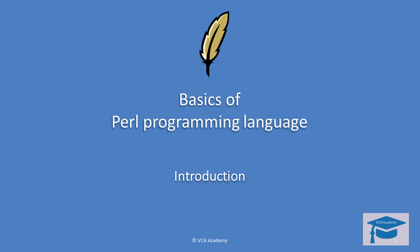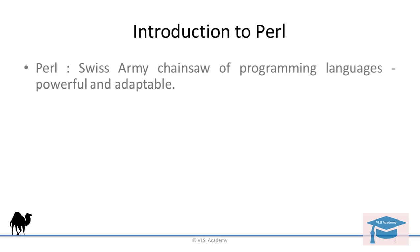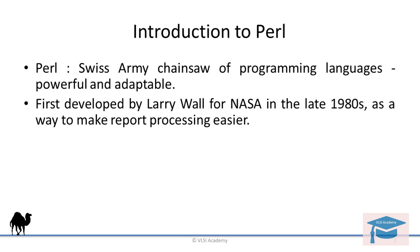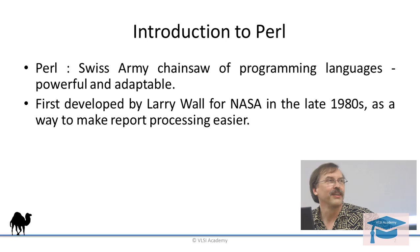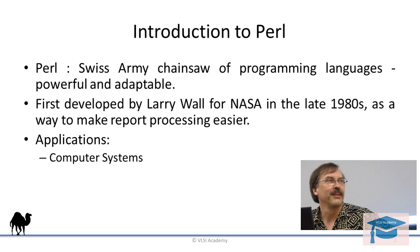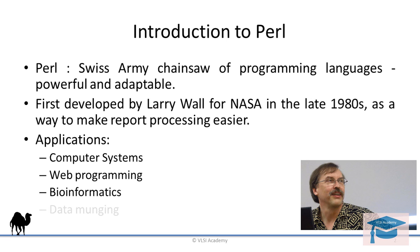Perl is a powerful scripting language, popularly known as the Swiss Army Chainsaw for programming languages. It is very powerful and adaptable. It was first developed by Larry Wall for NASA in the late 1980s as a way of making report processing easier. It is very useful in computer systems and has since evolved into automating system administration, web programming, bioinformatics, data munging, and even application development.